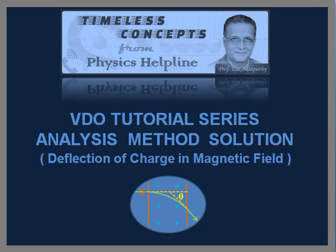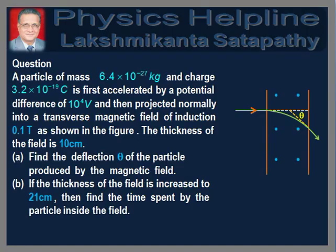In this video tutorial, we will discuss the problem on the deflection of a charged particle inside a magnetic field. The question is as follows: A particle of mass 6.4 × 10⁻²⁷ kg and charge 3.2 × 10⁻¹⁹ coulombs is first accelerated by a potential difference of 10⁴ volts and then projected normally into a transverse magnetic field of induction 0.1 tesla as shown in the figure. The thickness of the field is 10 cm. Find the deflection of the particle produced by the magnetic field.